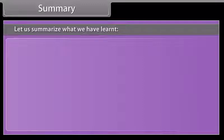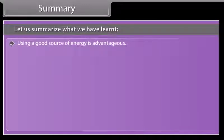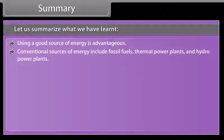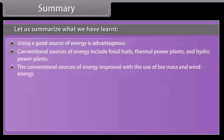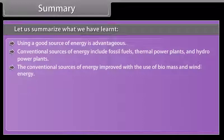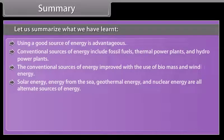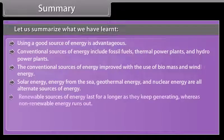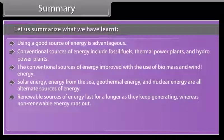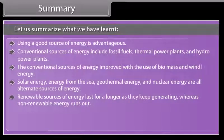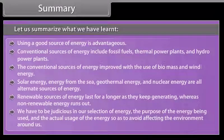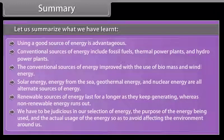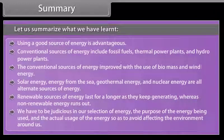Summary. Let us summarize what we have learnt. Using a good source of energy is advantageous. Conventional sources of energy include fossil fuels, thermal power plants, and hydropower plants. The conventional sources of energy improved with the use of biomass and wind energy. Solar energy, energy from the sea, geothermal energy, and nuclear energy are all alternate sources of energy. Renewable sources of energy last for as long as they keep generating, whereas non-renewable energy runs out. We have to be judicious in our selection of energy, the purpose of the energy being used, and the actual usage of the energy, so as to avoid affecting the environment around us.